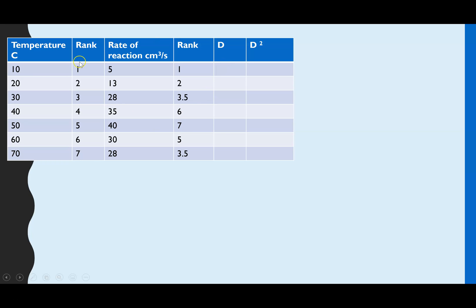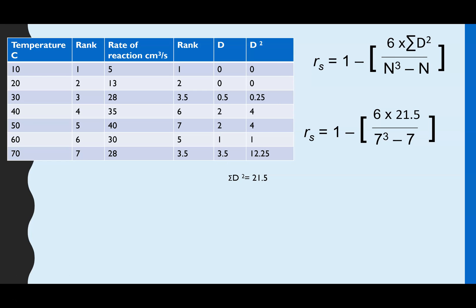D is working out what is the difference between the ranked values. So 1 and 1 there's no difference, 2 and 2 there's no difference but then we've got 0.5, 2, 2, 1 and 3.5. Then we square those differences and then we add all of that column together. So the sum of d squared and in this case that is 21.5 just adding up just adding up that column. And now we can input that into the formula.